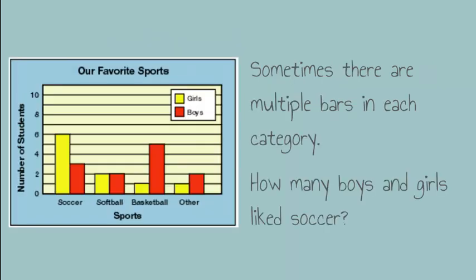Sometimes there are multiple bars in each category — we've seen this before. How many boys and girls liked soccer? If I go over here, soccer — girls are yellow, boys are red. I follow that up: that's six. Soccer again — it's right in the middle there. What's between two and four? It's three. So six plus three is nine. How many boys and girls like soccer? Nine.